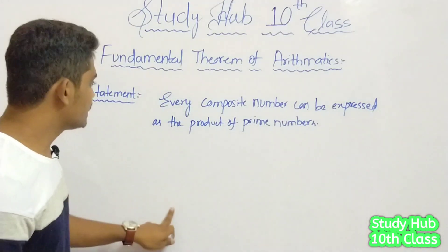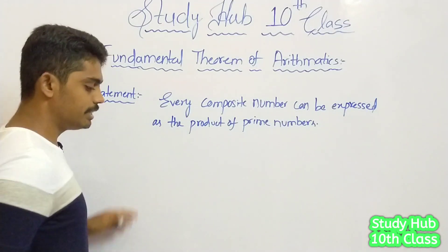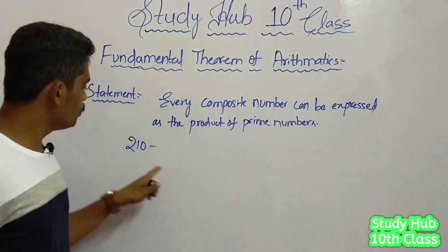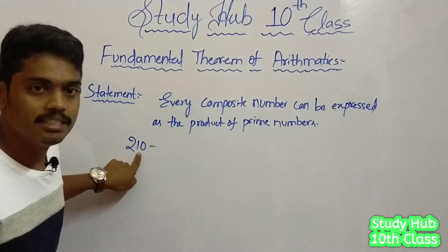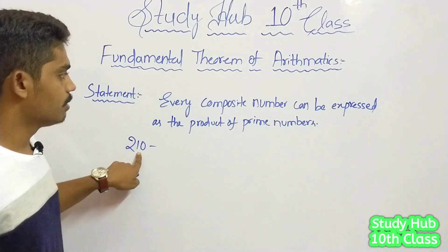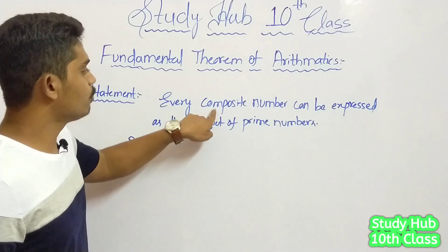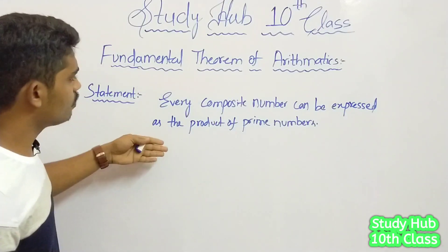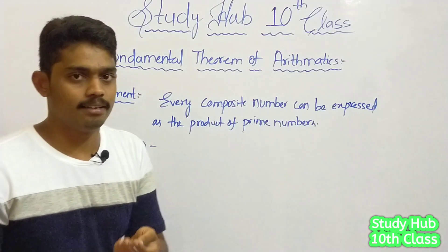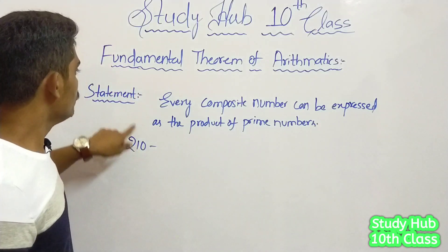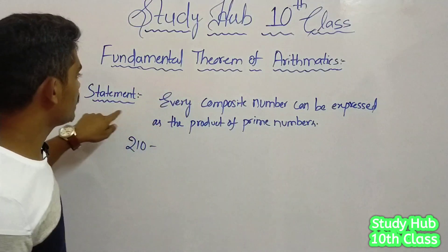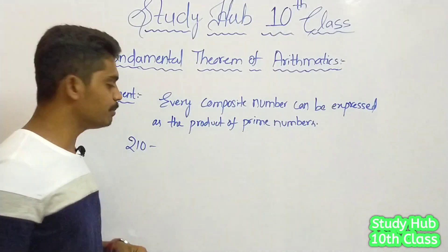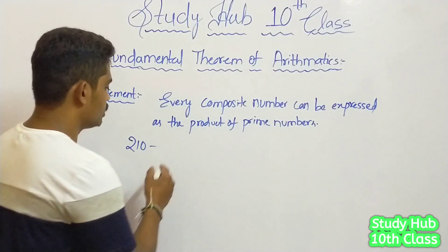So how are we going to express composite numbers as the product of prime numbers? Let us check with an example. Let us take 210 as an example and try to factorize this. I know I should explain what is a composite number, what is a prime number, what is prime factorization and why we are learning all this — I will explain in detail. But for now, let us check what the fundamental theorem of arithmetic is saying.